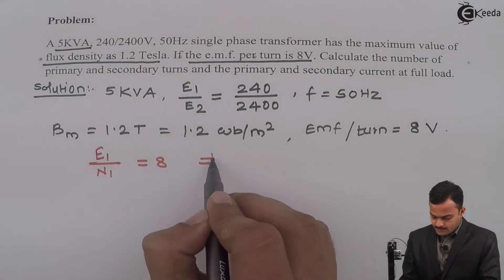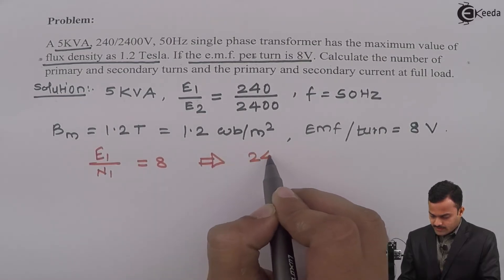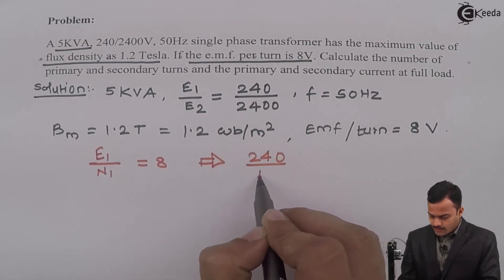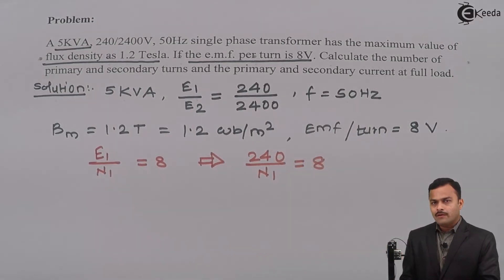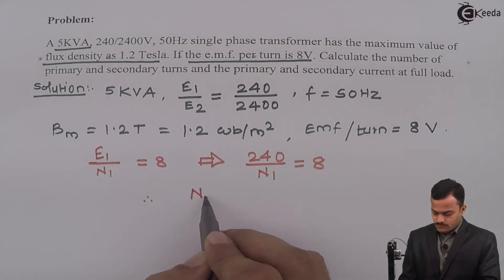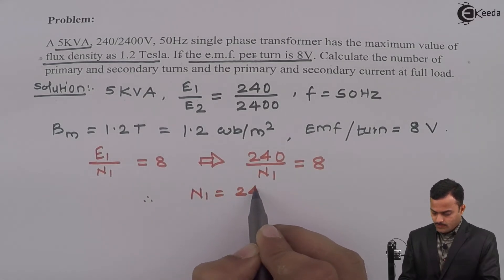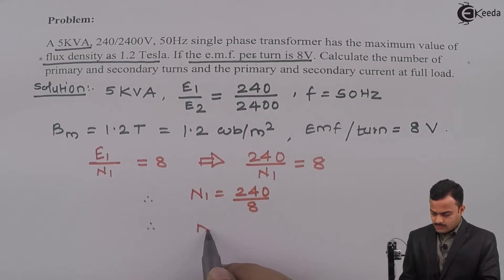This implies 240 upon N1 equal to 8. So, I will get number of primary turns directly which is equal to 240 divided by 8, nothing but 30.